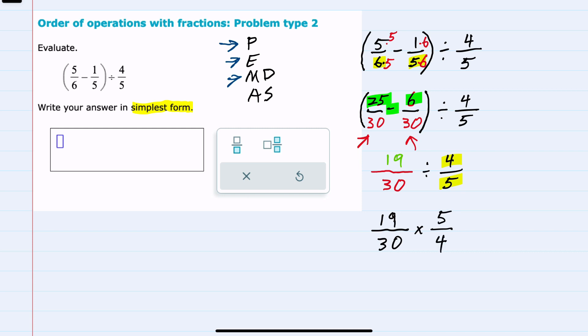I've now turned division into multiplication, and I can multiply straight across, but it's always a good idea to see if there are any common factors that we can cancel. So cross-canceling: Is there a number that divides evenly into 19 and 4? No. But is there a number that divides evenly into 30 and 5? Yes. Both 30 and 5 are divisible by 5. So if we divide 5 by 5 we get 1, and if we divide 30 by 5 we get 6.